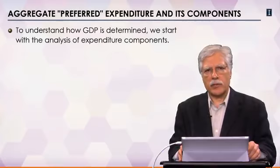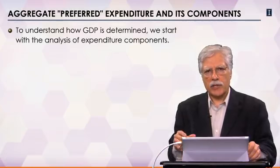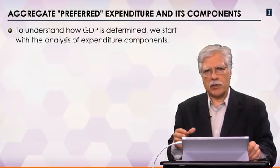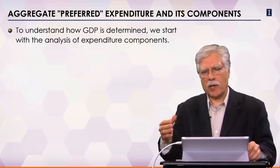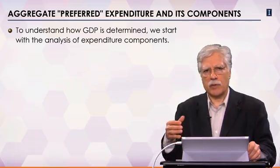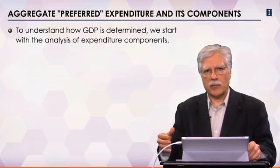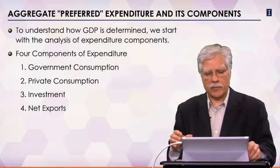In this video, we focus on aggregate preferred expenditure and its components. To understand what determines GDP, we need to understand different components of GDP. Where does expenditure come from? From households, from investors, from government, from the rest of the world.